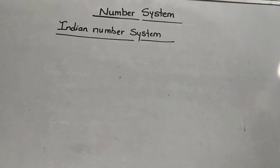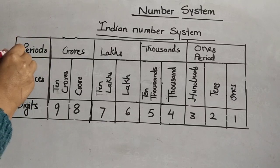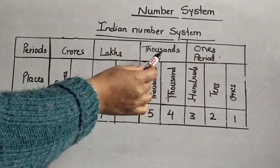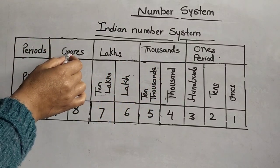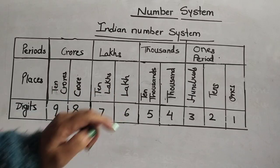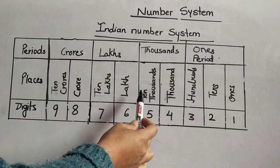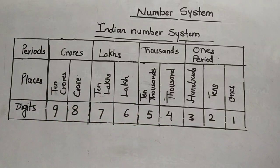Let us learn about the Indian number system. This is the Indian place value system with its periods: the ones period, thousands period, lakhs period, and crore period. The places are: ones, tens, hundreds, thousands, ten thousands, lakhs, ten lakhs, crores, and ten crores.